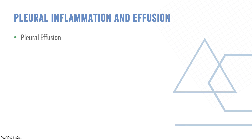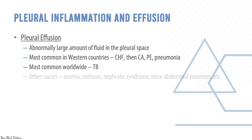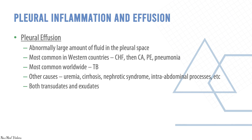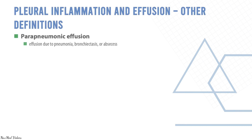Pleural effusion is an abnormally large amount of fluid in the pleural space. The most common cause in western countries is congestive heart failure; the most common worldwide is tuberculosis. Other causes include uremia, cirrhosis, nephrotic syndrome, and intra-abdominal processes. It can be both transudate and exudate. A parapneumonic effusion is associated with pneumonia. Pleuritis is inflammation of the pleura.